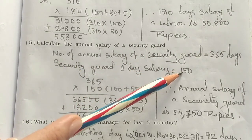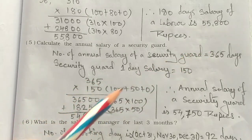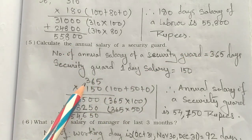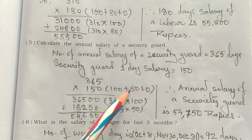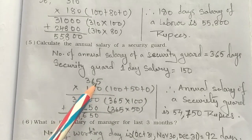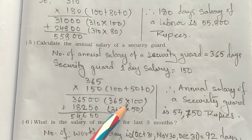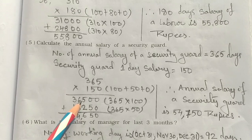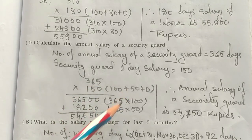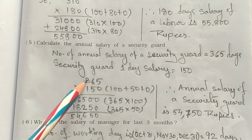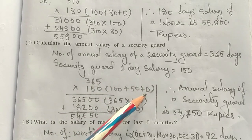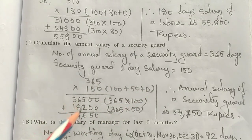We multiply 365 × 150. Breaking it down: 365 × 100 = 36,500, 365 × 50 = 18,250, and 365 × 0 = 0. Leave the third line. Adding 36,500 and 18,250 gives 54,750.